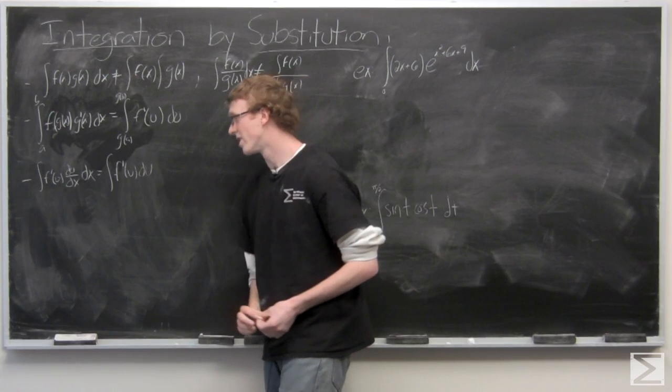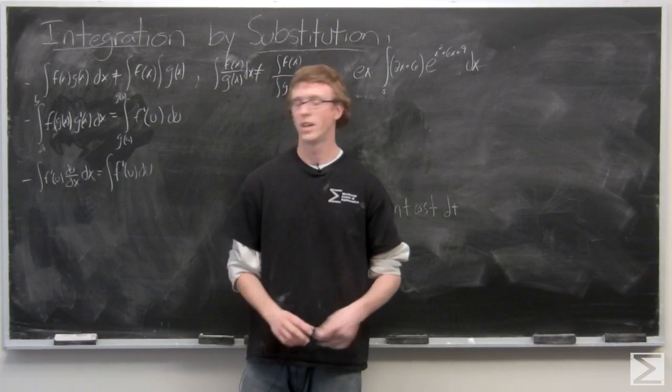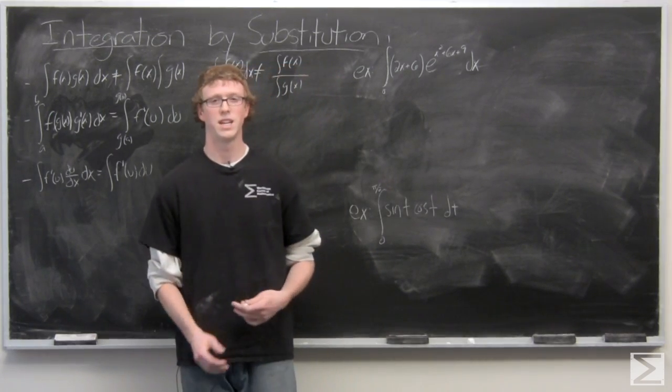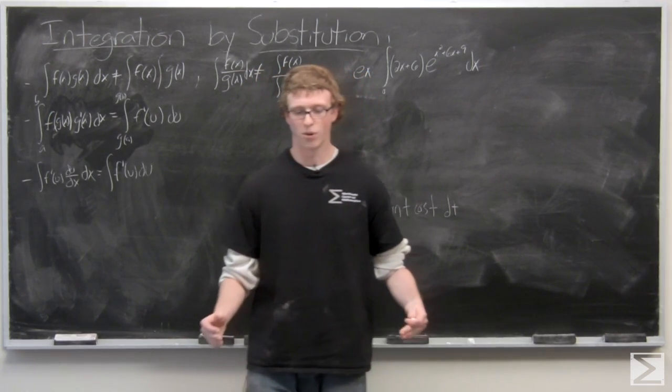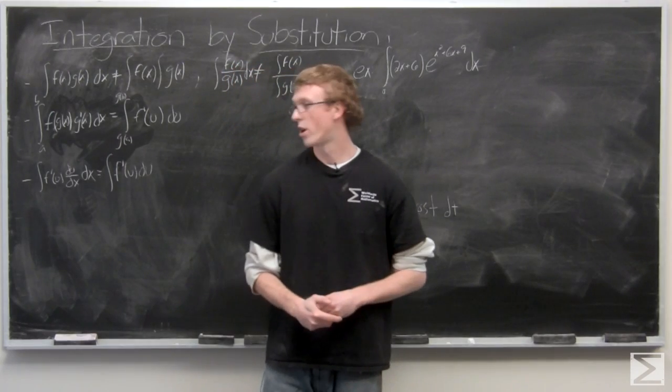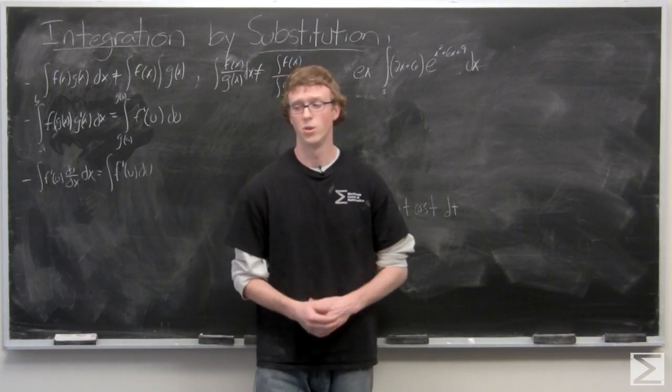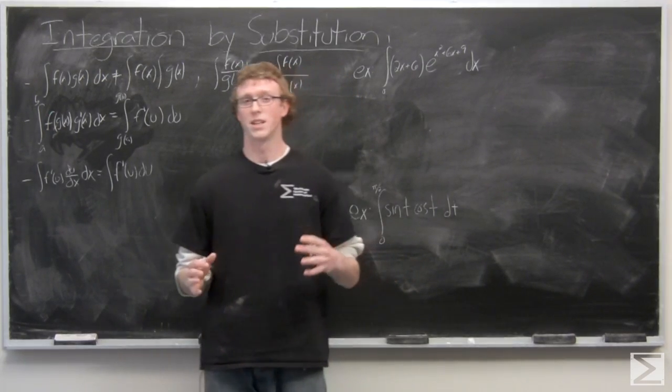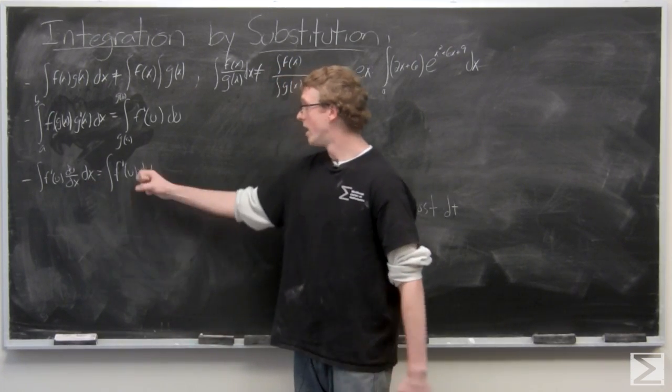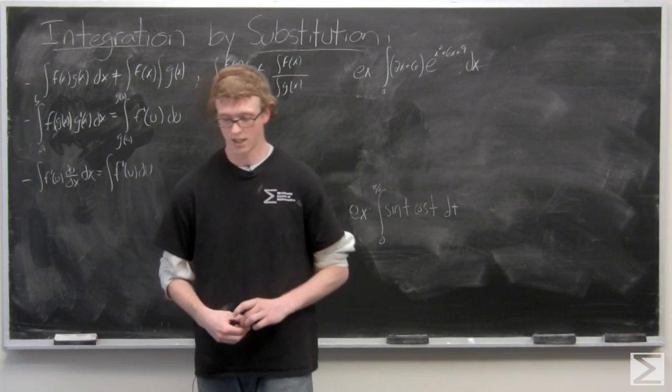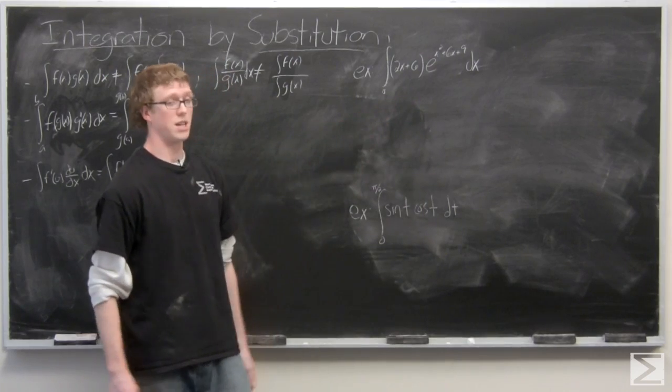Now, this notation might be a little bit confusing to understand, but basically what it means is that if we have a function, and then we can take, so if we have a complex function, we can take it and break it up and say, okay, one part of this function is equal to u. And then if we take the derivative of u, we're going to have something times dx, which can actually get rid of this dx in our integral and become du. Now, the best way to see this is with an example, so we're going to go ahead and immediately jump into this example here.